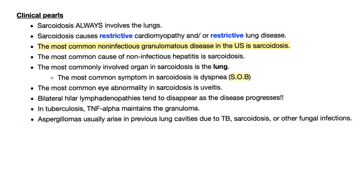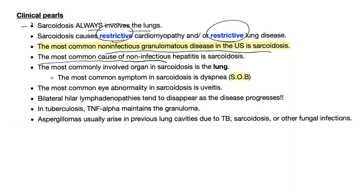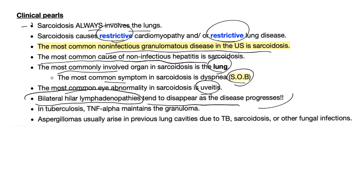Key facts: Sarcoidosis always involves the lung. It causes both restrictive cardiomyopathy and restrictive lung disease. It is the most common non-infectious granulomatous disease in the United States and the most common cause of non-infectious hepatitis. The most commonly involved organ is the lung; the most common symptom is dyspnea; the most common eye abnormality is uveitis. You'll find bilateral hilar lymphadenopathy, but it tends to disappear as the disease progresses.